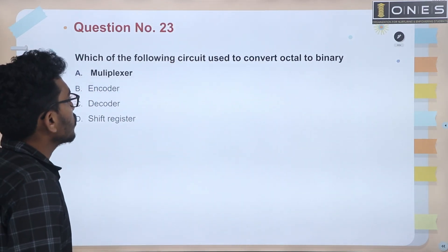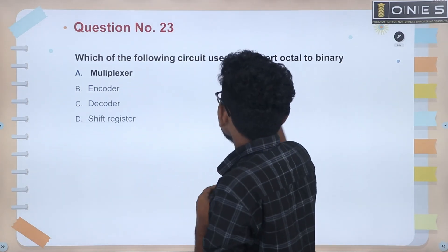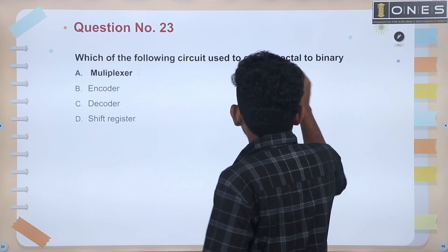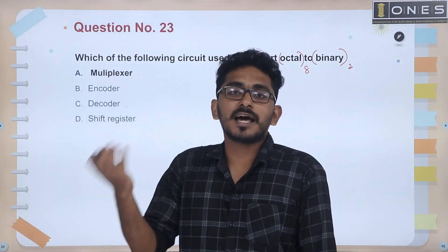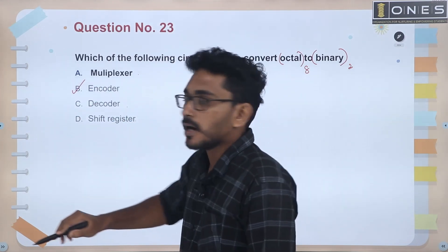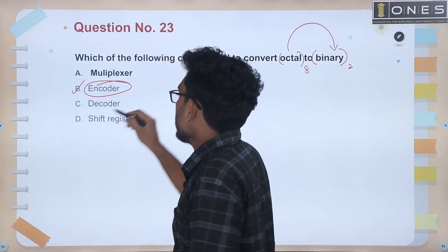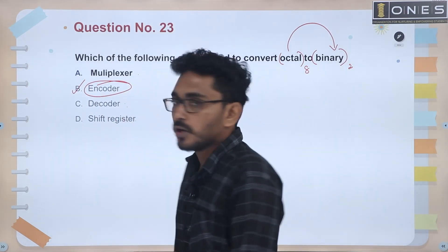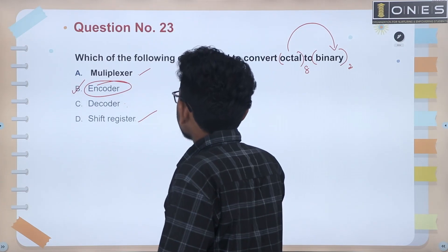Next question: which of the following circuits is used to convert octal to binary? Options are multiplexer, encoder, decoder, shift register. Octal is base 8, binary is base 2. When we convert octal to binary, we encode the data. So we use an encoder. The answer is encoder.